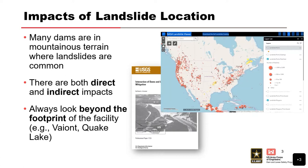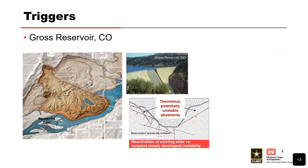Always look beyond the facility footprint — it's not just around the dam, but it could be way upstream. Upstream is typically the main concern, but you can have some effects downstream as well. This is Gross River, Colorado. This is a slide where you can see Bonneville Dam there.